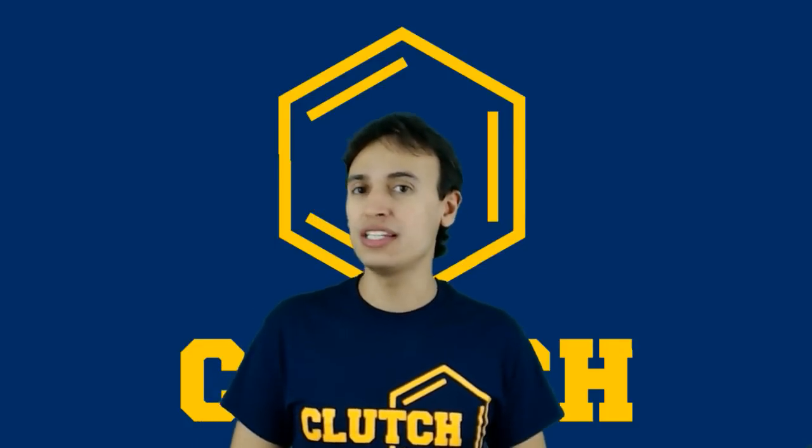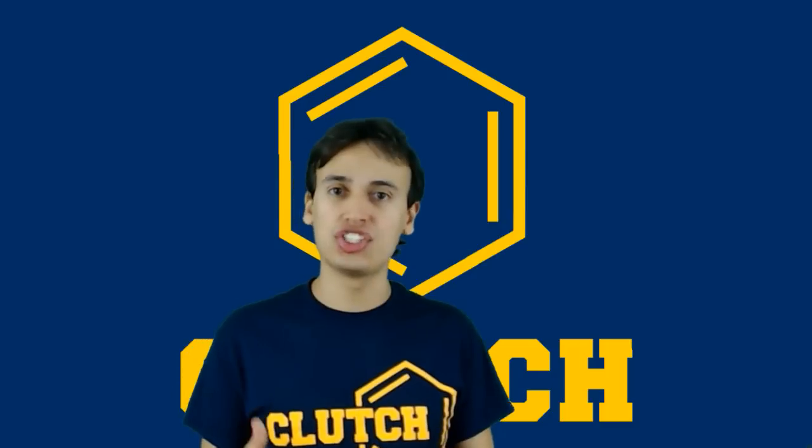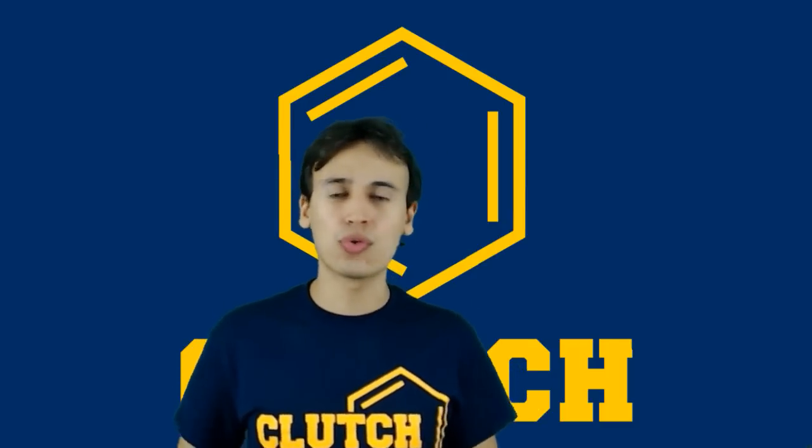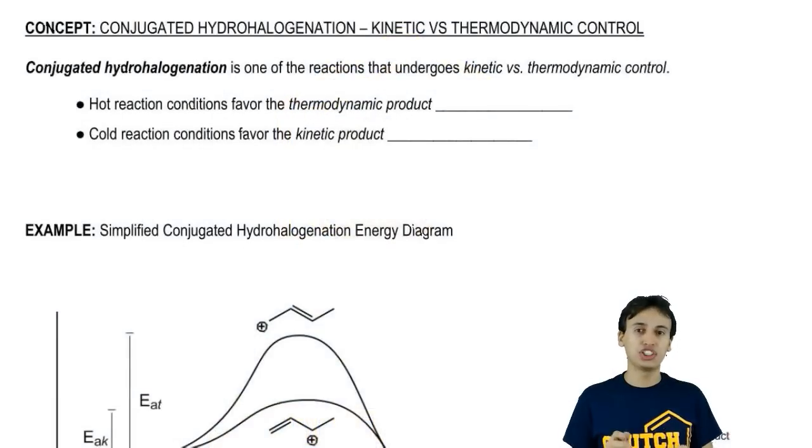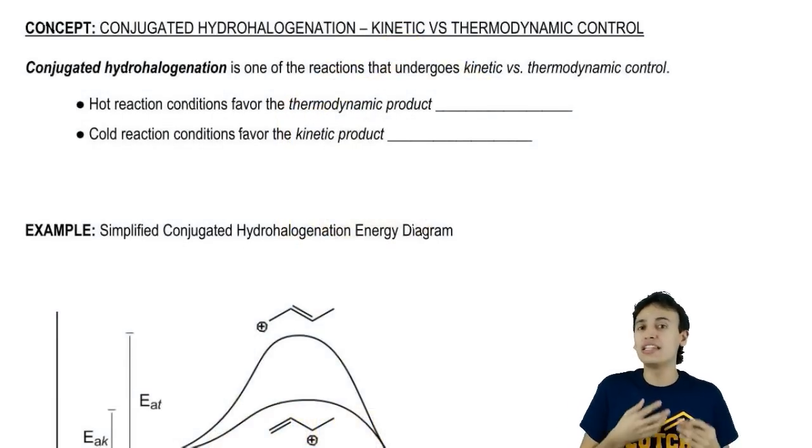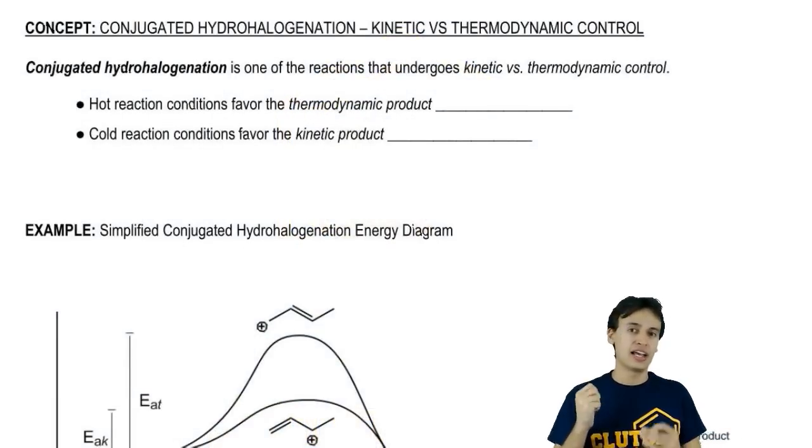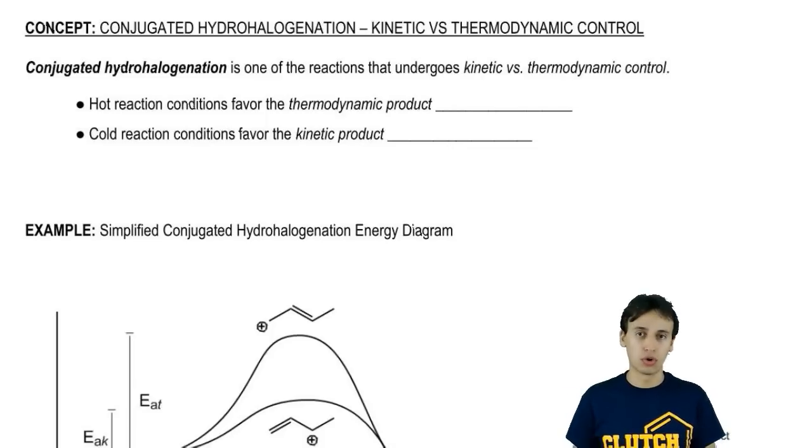Now I want to go into a little bit more detail on what it means for a reaction to be kinetically controlled or thermodynamically controlled. The reaction called conjugated hydrohalogenation is a really good example of a reaction that has these different types of control.